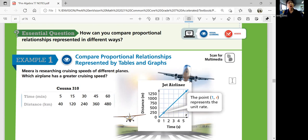So example one, comparing proportion relationships represented by tables and graphs. Mira is researching cruising speeds of different planes. Which airplane has a greater cruising speed? Cessna is represented by table and jet airliner is represented by graph. So in five minutes, it goes 40 kilometers for Cessna. And then jet, in five minutes, it goes 1250 meters. So what is that in kilometers? A thousand meters is one kilometer. So a thousand and 250 meters is 1.25 kilometers.